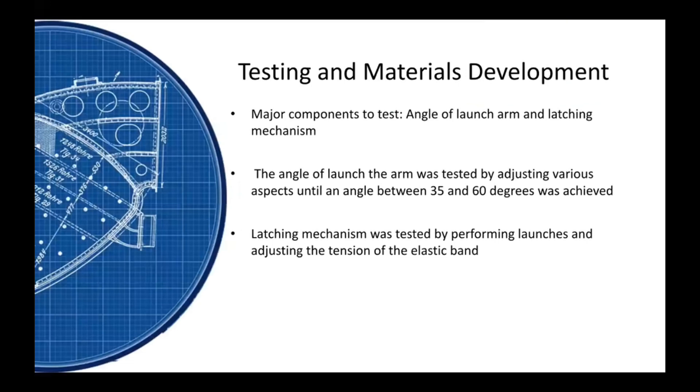What I previously said was later tested. The major components that were tested were the angle of launch and the latching mechanism. By testing various angles between 35 and 60 degrees, the optimal launch angle of 39 degrees was found together with a specific tension. The tension wasn't measured, but the beanbag's velocity was calculated, which ended up being 8.19 meters per second.